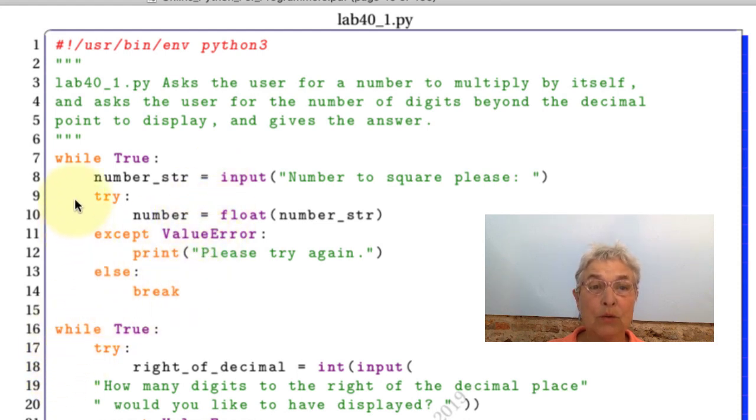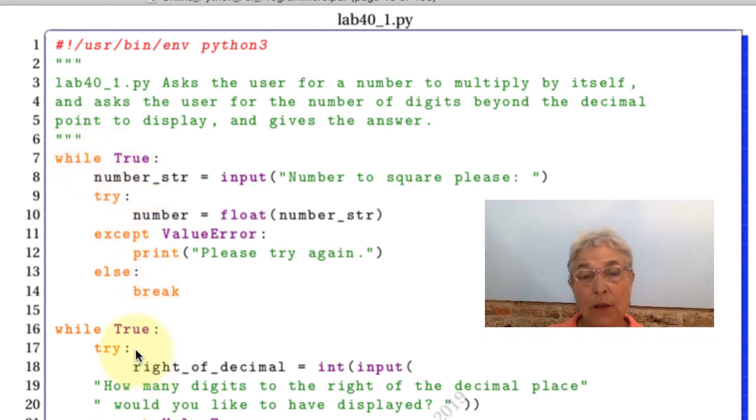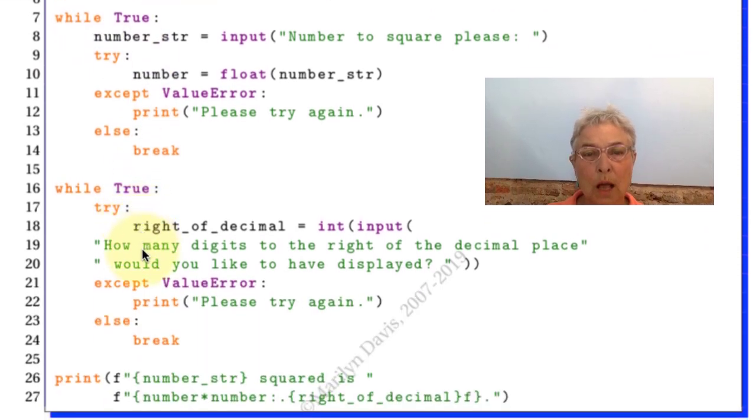And this goes around again, tries again. Here's another while true and we're asking for the number of digits to the right of the decimal. If there's an error we don't let them out, if it's okay we're out.